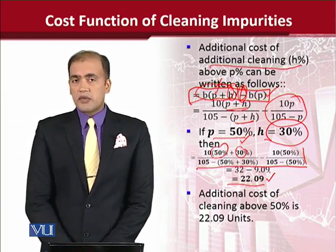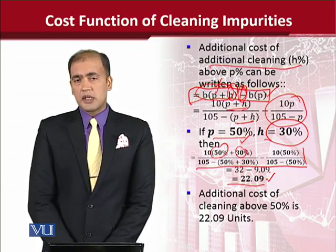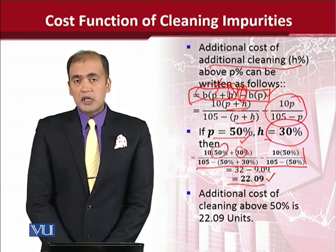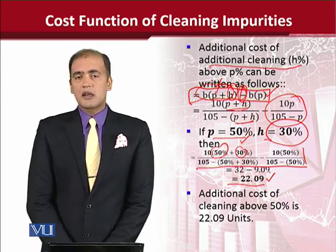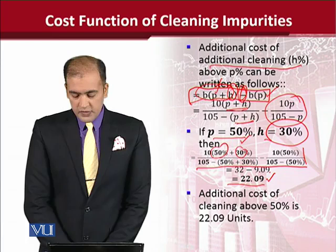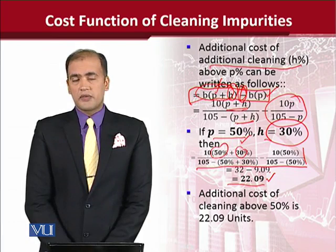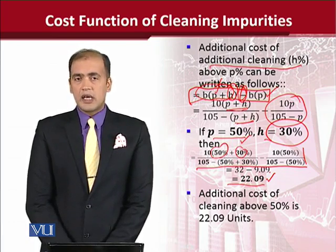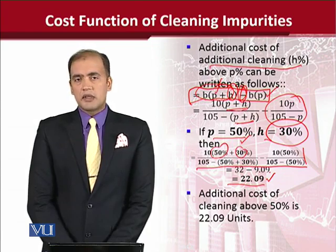You can see that the first 50% was costing us only 9.09 units, whereas the additional 30% has cost us 22.09 — more than double the cost for 50%. So there is a startling increase, which we can feel even when we look at additional cost alone. In this way we can do the analysis, which is the gist of understanding economic theory and its application — breaking down trends and noting changes in variables bit by bit.